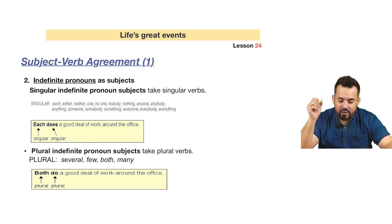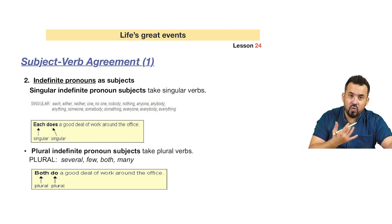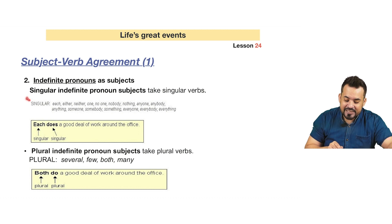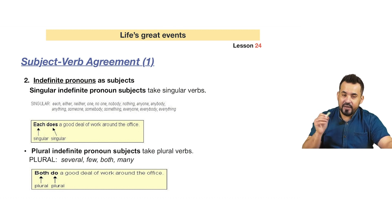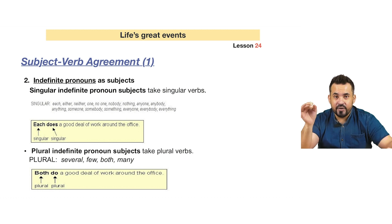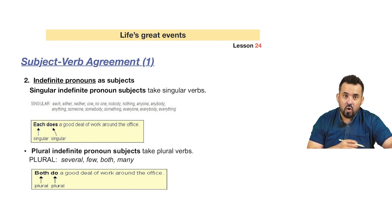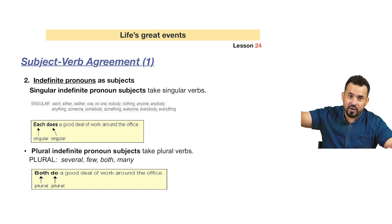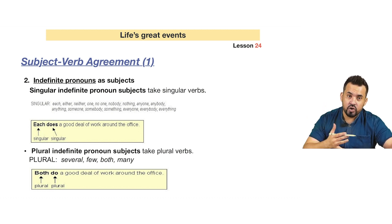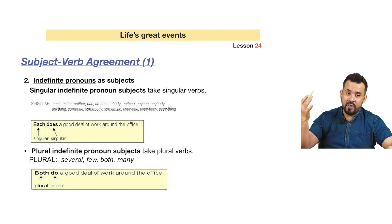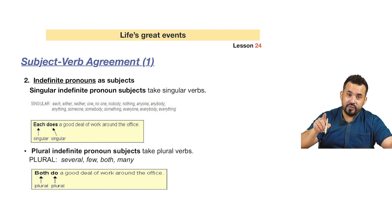Rule number two: indefinite pronouns as subjects. Indefinite pronouns include 'each,' 'every,' 'any,' 'no,' 'other,' 'nothing.' Singular indefinite pronoun subjects take singular verbs. 'Each' is always singular, so we use 'does' — 'each does a good deal of work,' 'each one is happy.' 'Both' is always plural, so we use the plural verb form — 'both do a good deal of work,' not 'both does.'